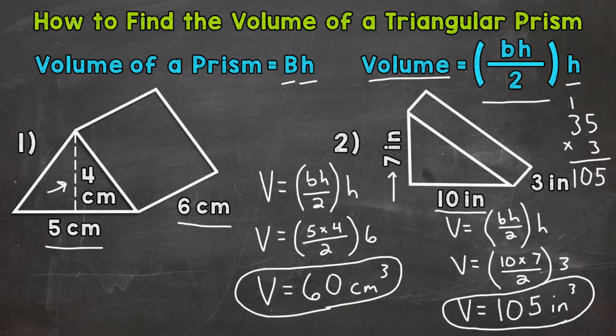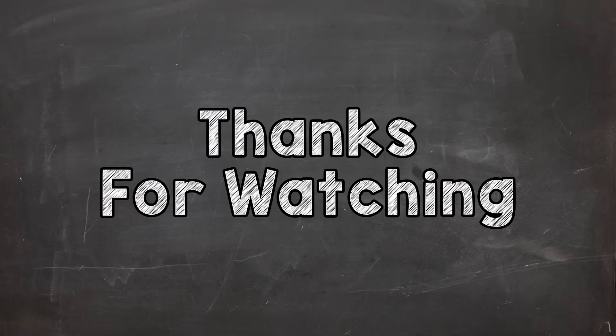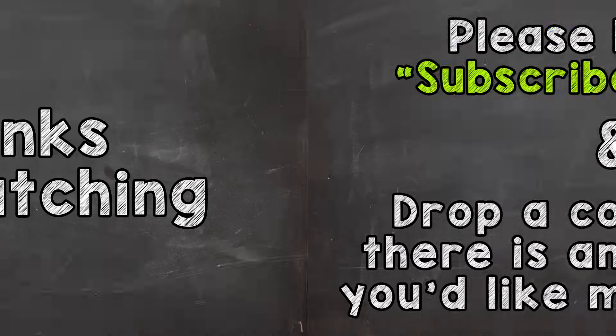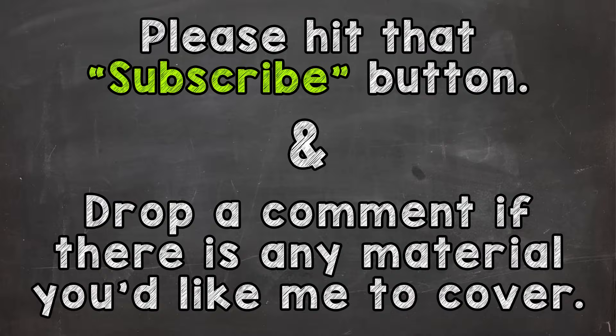There's how you find the volume of a triangular prism: take the area of our triangular base and multiply it by the height of the prism. I hope that helped. Thanks so much for watching. Until next time, peace.